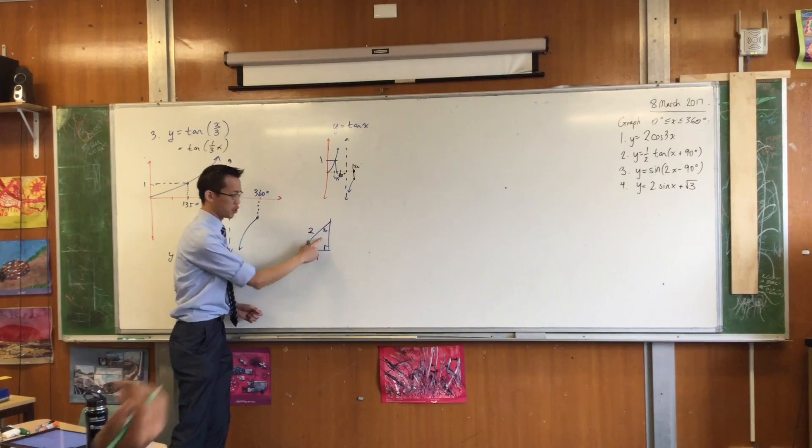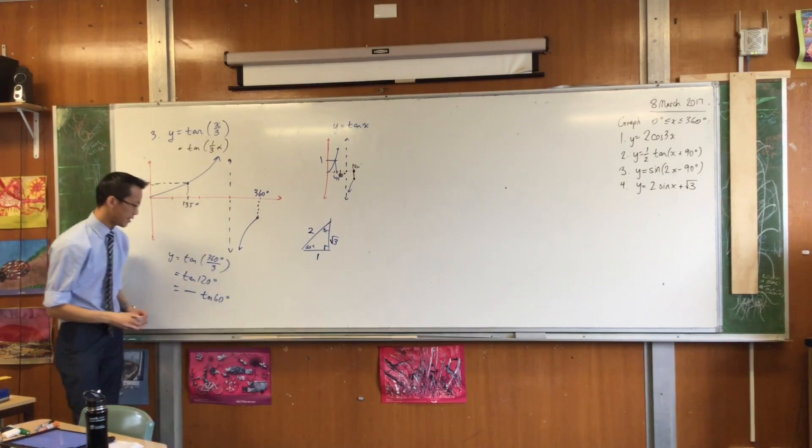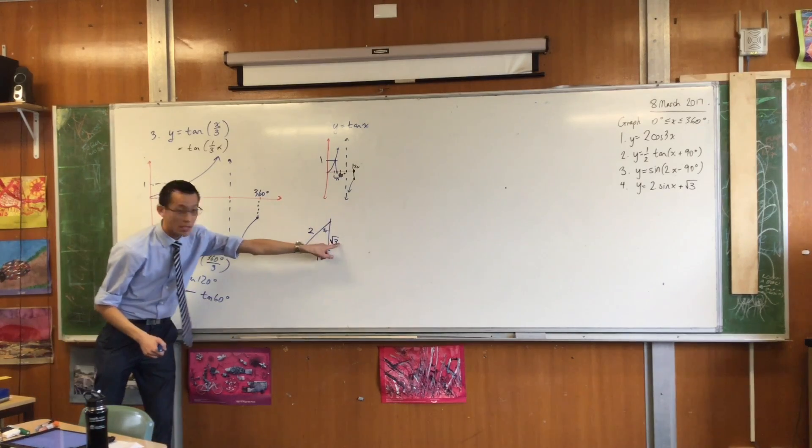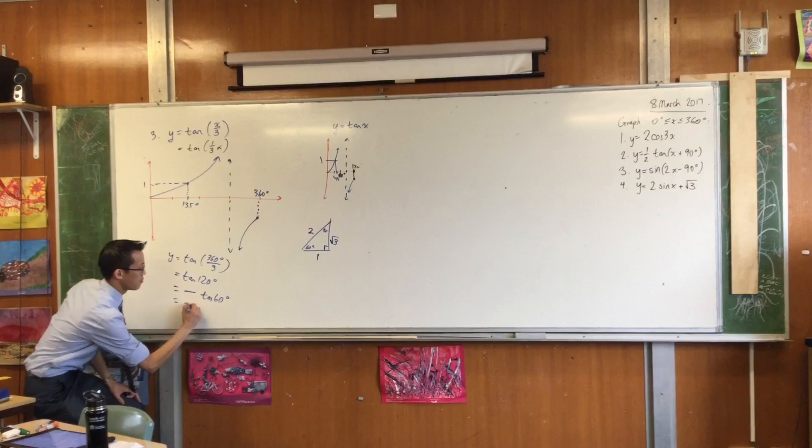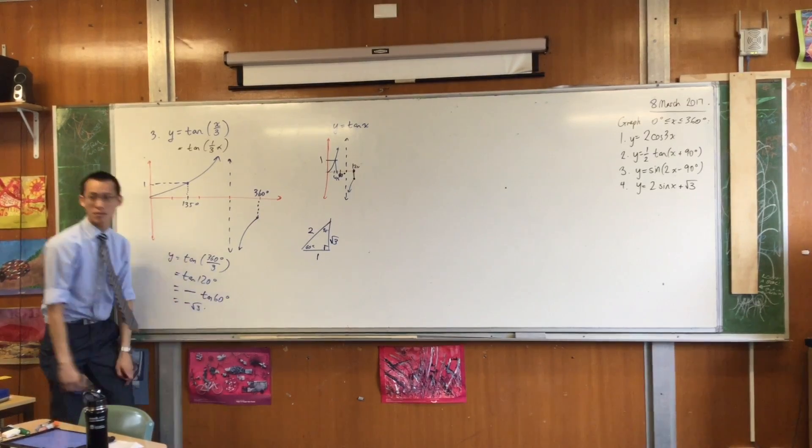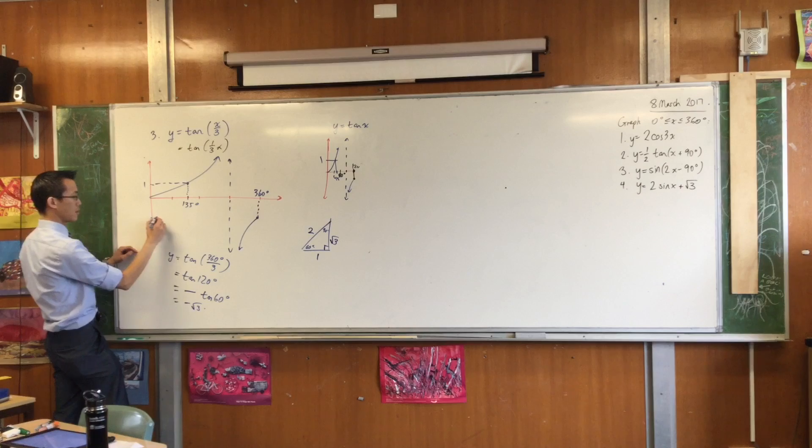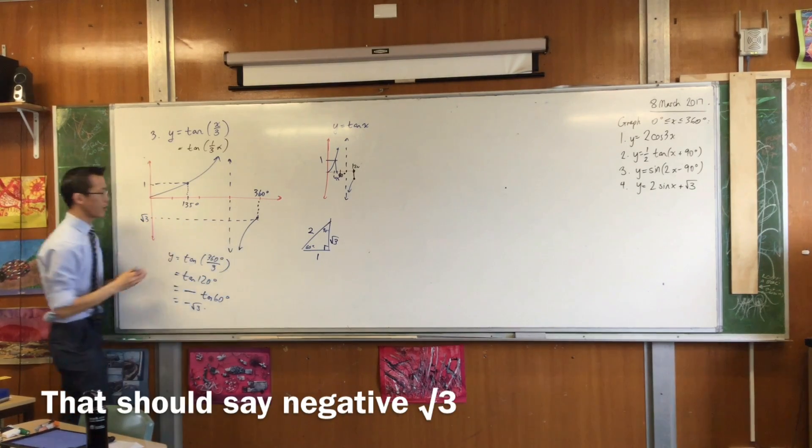1, 2, 3. 1, 2, because sine 30 is a half. Yes. Which makes the last one root 3. Okay, tan 60. Can you read it off for me? Opposite on adjacent. Yes. Minus root 3. Okay. So now I know where this is. Here we go. There you go.